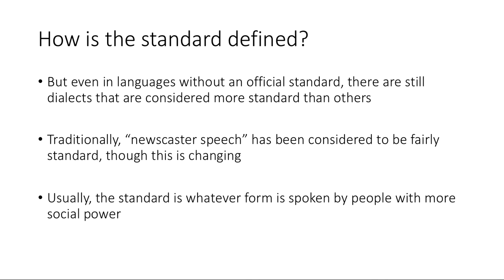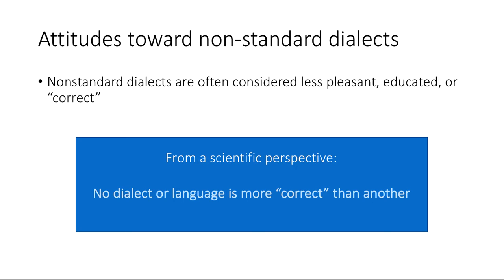Usually the standard is whatever form is spoken by people with more social power — more wealthy, more highly educated, male — basically any social asymmetry you can think of. The standard is the variety spoken by those with higher power. As for non-standard dialects, they're often considered less pleasant, less educated, less correct. But from a scientific perspective, no dialect or language is more correct than another.